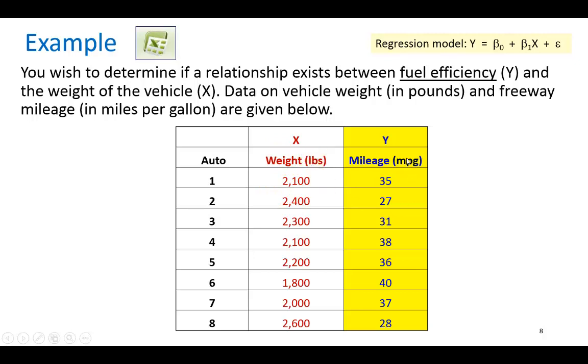As you can see the dependent variable here is miles per gallon which is our measure of fuel efficiency. For automobile number one it weighs 2,100 pounds and gives us 35 miles to the gallon. Vehicle number eight weighs 2,600 pounds and gives 28 miles to the gallon. So we're going to go to Excel and demo it.